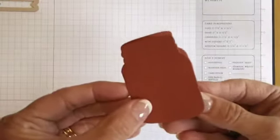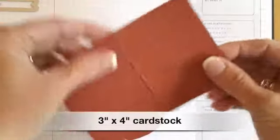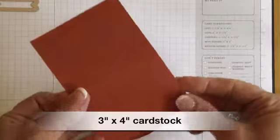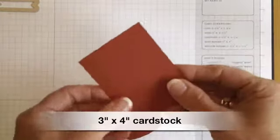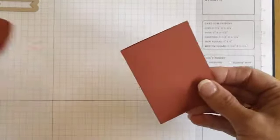In order to create this tag you're going to want to start with a piece of paper that is three inches by four inches and then you'll fold that in half and here's the trick.